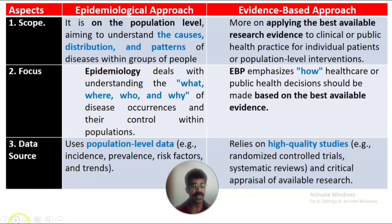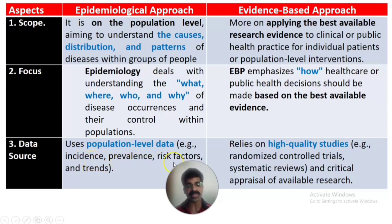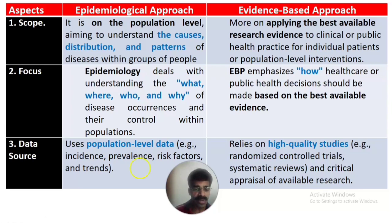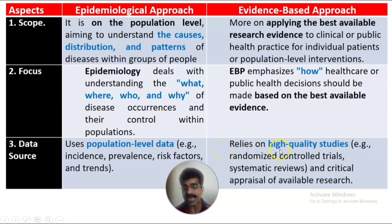The third aspect is data source. In the epidemiological approach, data sources are at the population level — for example, incidence of a particular problem, prevalence of the problem, risk factors, and trends or fluctuations in occurrence. Incidence refers to new cases, prevalence refers to total new and old cases, risk factors are the various influencing factors, and trends refer to time-based fluctuation such as seasonal or monthly variation.